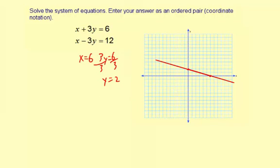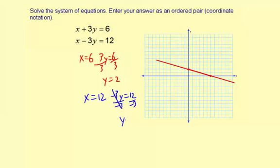Okay, now let's look at that second equation. We have x equals 12 for the x-intercept. And for the y-intercept, we have negative 3y equals 12. Divide by negative 3. So y equals negative 4.